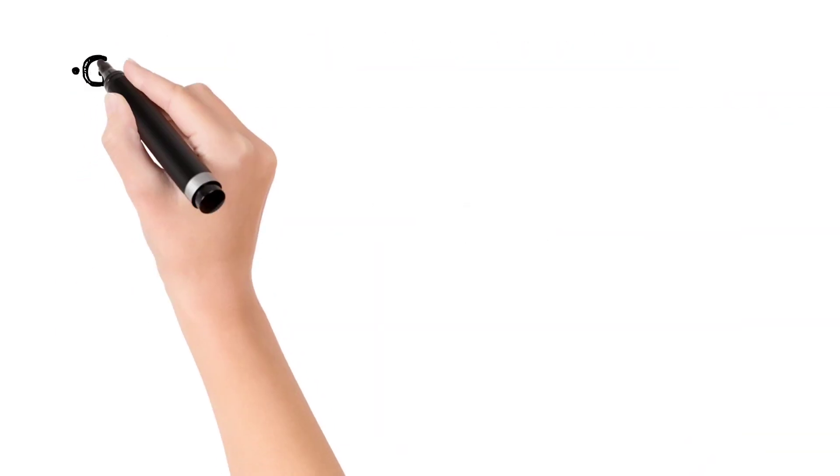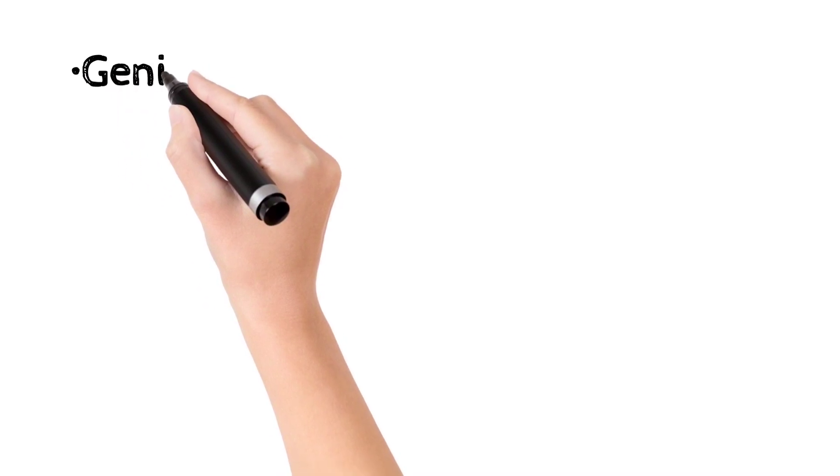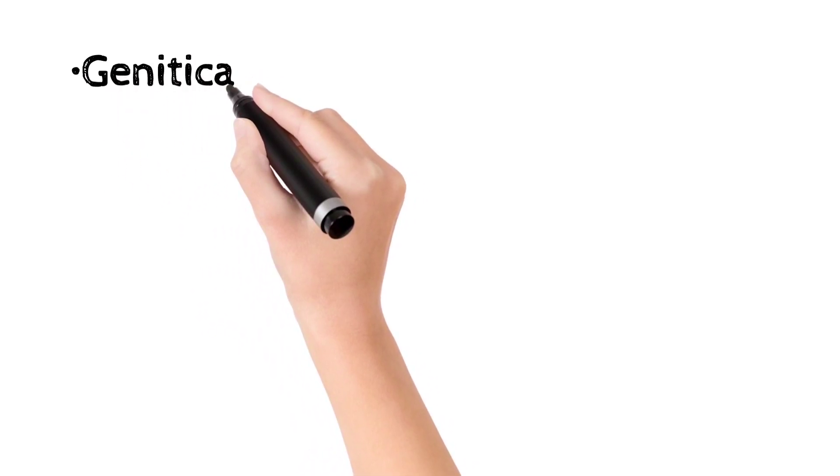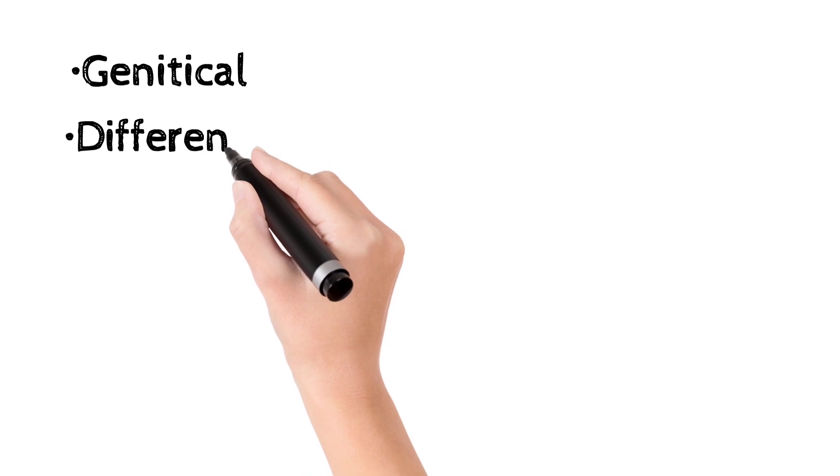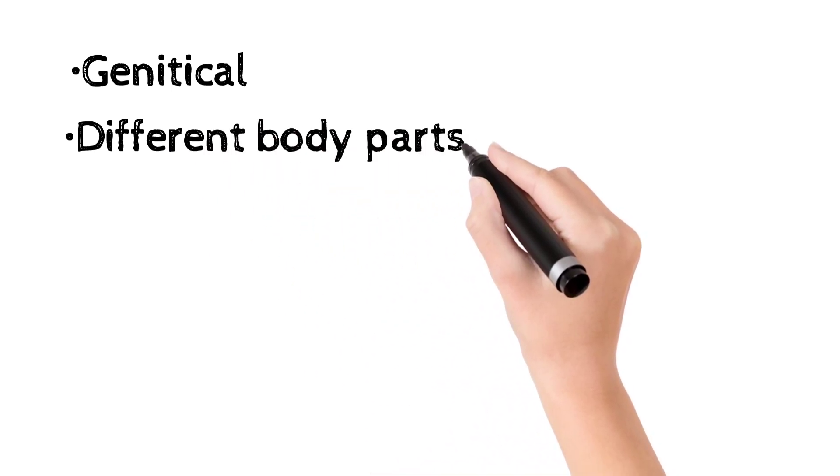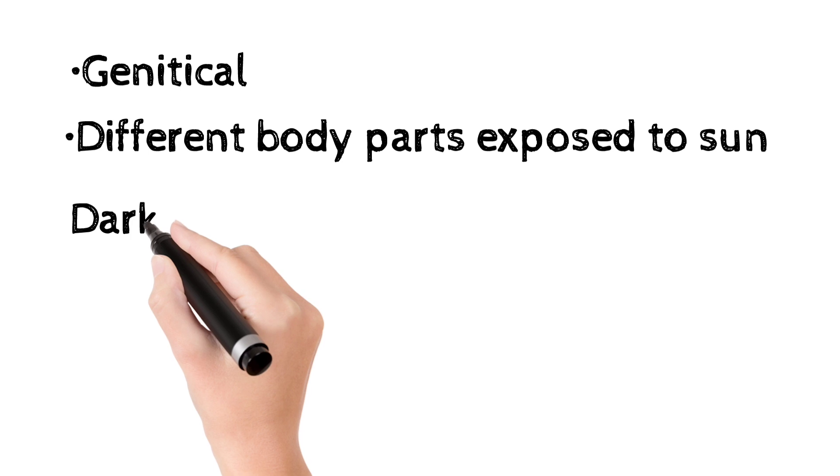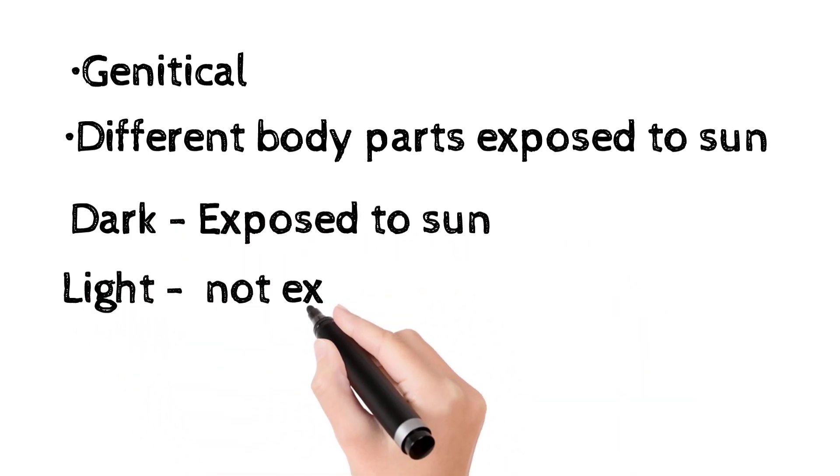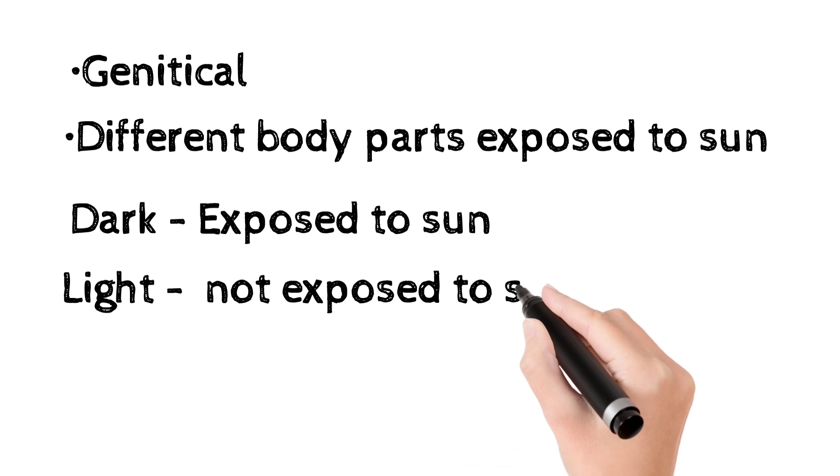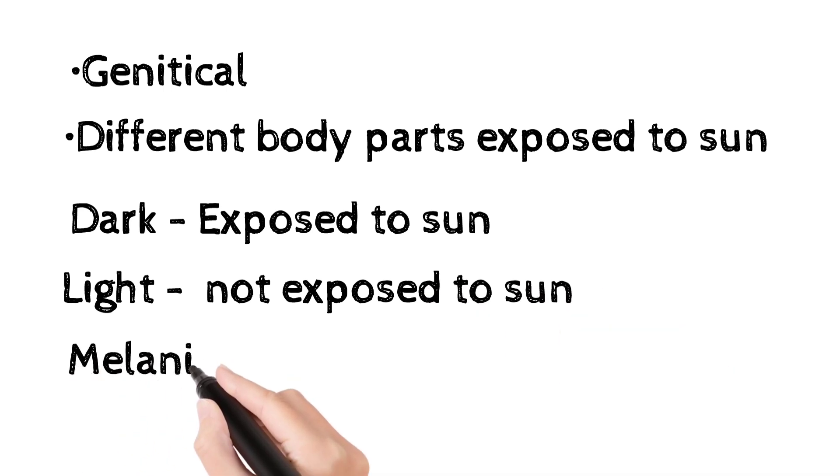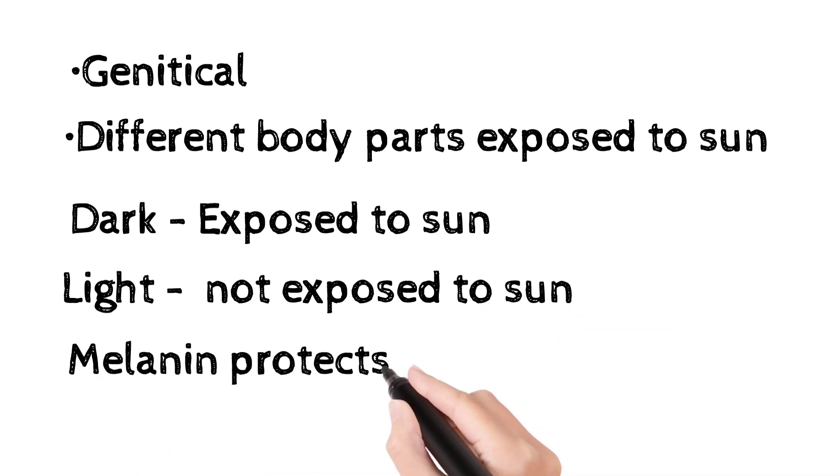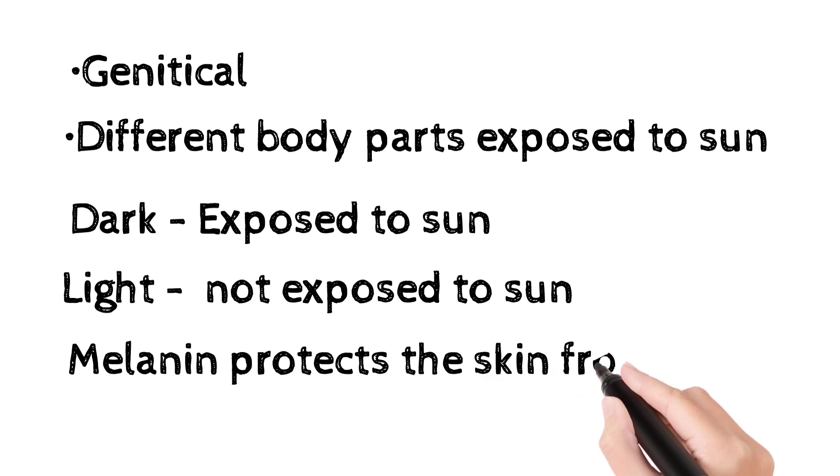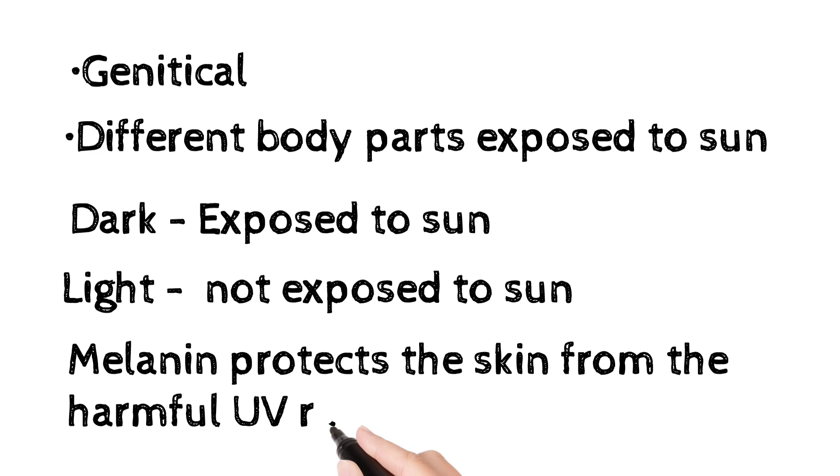In different body parts with sun exposure, the skin is darker, while areas not exposed are lighter in color. Melanin also protects the skin from the harmful effects of ultraviolet rays.